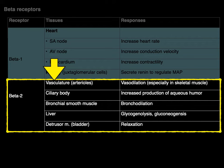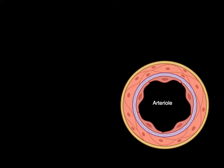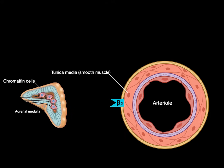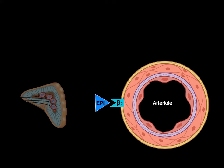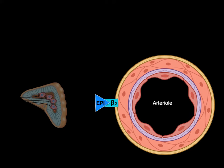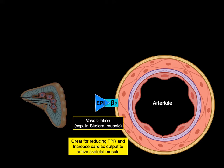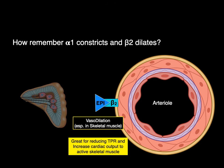Let's talk about beta-2 receptors on systemic arterioles — when stimulated, they cause vasodilation. Here's a systemic arteriole in the tunica media with smooth muscle containing a beta-2 adrenergic receptor. When chromaffin cells from the adrenal medulla secrete epinephrine and it binds to the beta-2 receptors, you get vasodilation. This is especially true in blood vessels in skeletal muscle. Stimulating beta-2 receptors in skeletal muscle is great for reducing total peripheral resistance and increasing cardiac output to activate skeletal muscle.